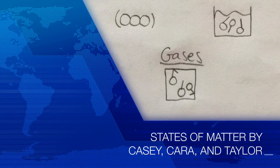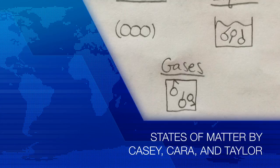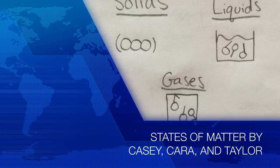We're going to talk about phase changes. Taylor will cover freezing point, Casey with melting point, and Caro with boiling point. The boiling point is the temperature at which water turns into vapor, steam, or gas — liquid turns into gas.